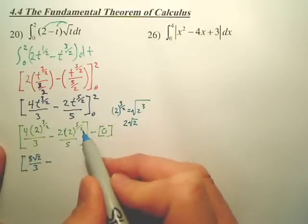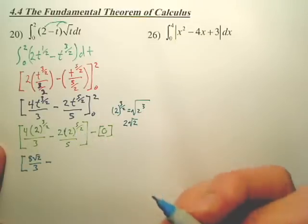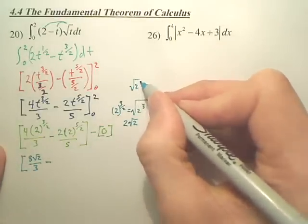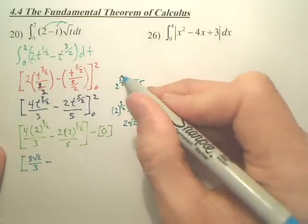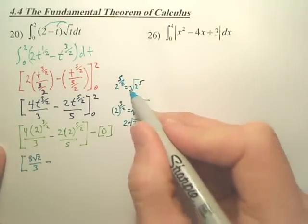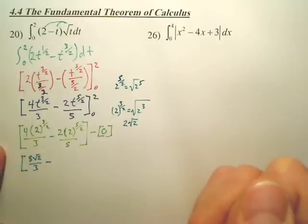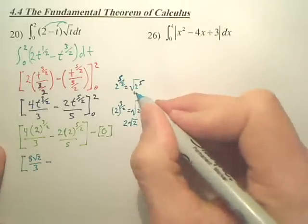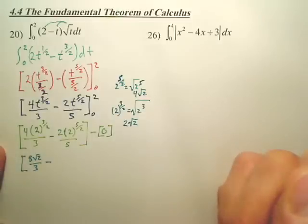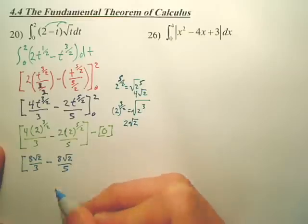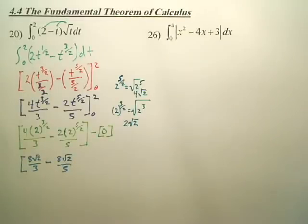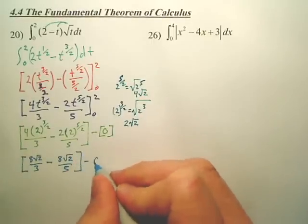what's 2 to the 5 over 2? 2 to the 5 over 2 is the square root of 2 to the 5th. Wouldn't that be 4 square root 2? So it's 8 square root 2 over 5 minus 0.